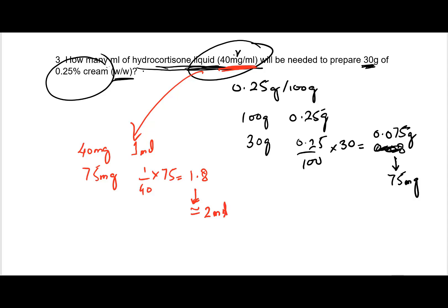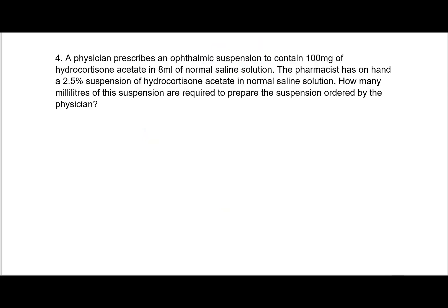In this type of question, where I'm making a cream from a liquid, I started from the end: I figured out how much hydrocortisone I actually need for the cream — which was 75 milligrams — and then calculated how many milliliters of that liquid would provide me those 75 milligrams.